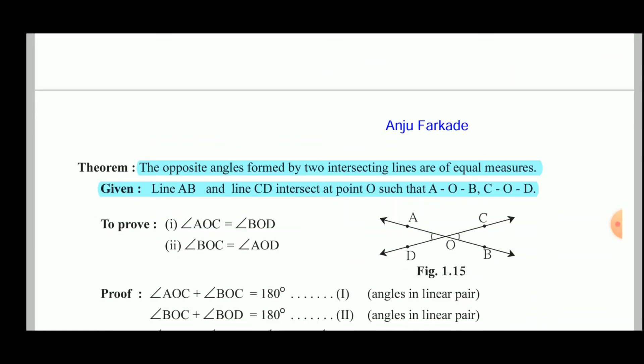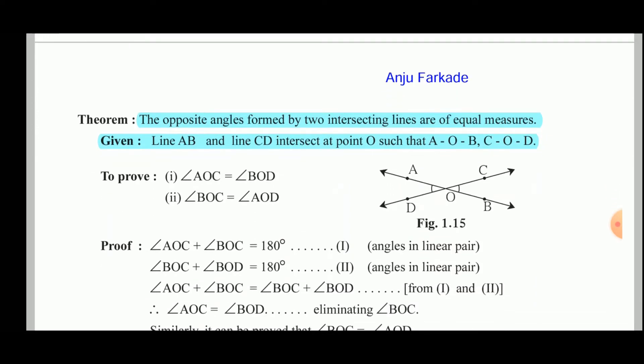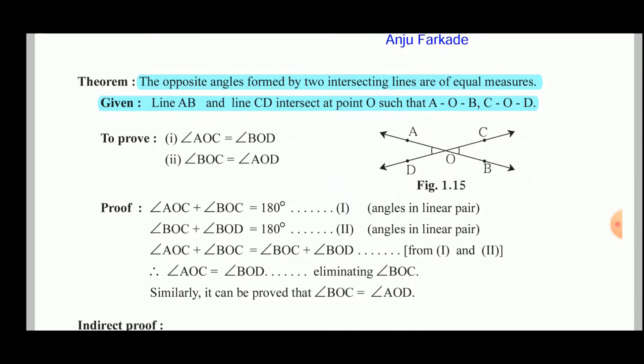Now let us see how to write conditional statements as theorems and their converses. Conditional statements are called theorems, and their converses are called the converse of the given theorem. One example is given in this chapter. Let us consider a star theorem — the proof of this theorem you have to learn, as it can be asked in the exam.